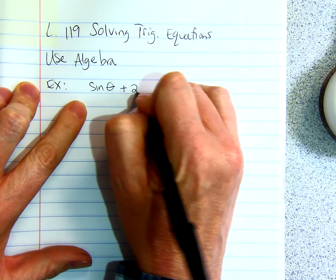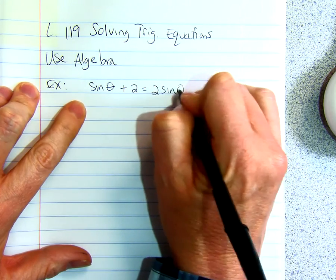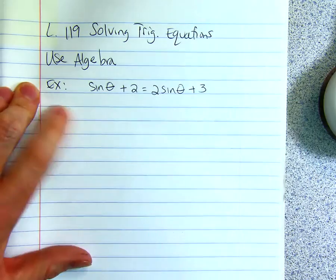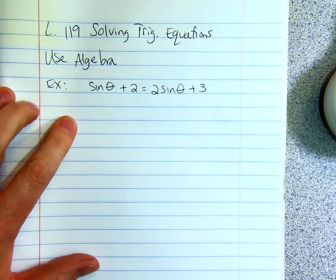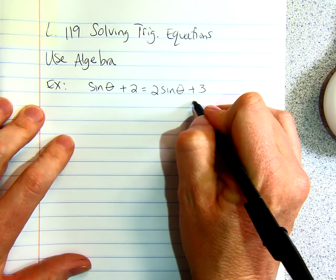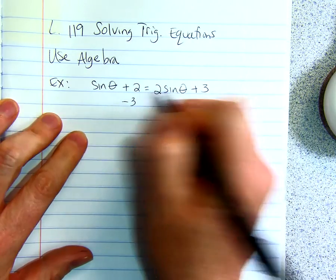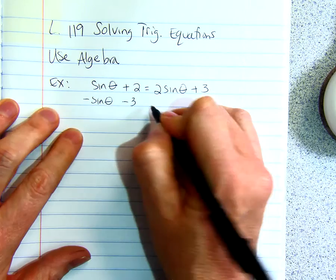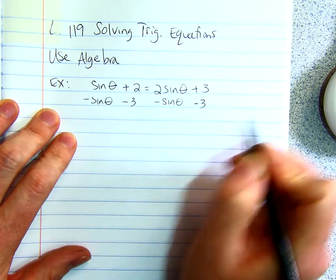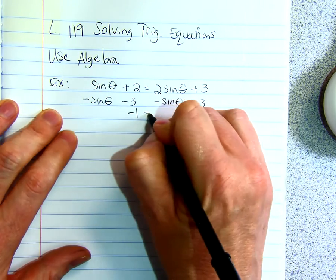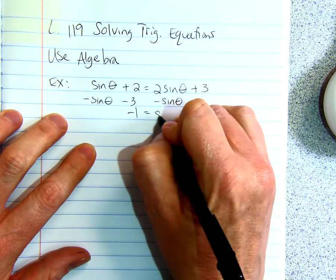Sine theta plus 2 equals 2 sine theta plus 3. So what I'm going to do is I'm going to subtract 3 from both sides. And I'm going to subtract sine theta as if it were a variable. So I have negative 1 equals sine theta.